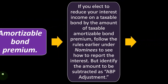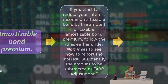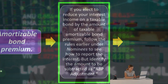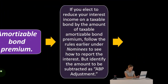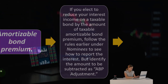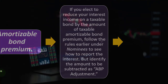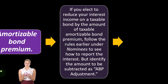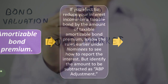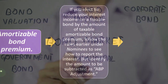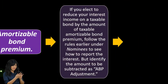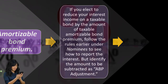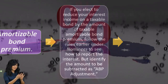For amortizable bond premium: when investing in bonds, you might be buying individual bonds or bonds within mutual funds. When you buy a bond, you're essentially loaning money to a corporation or government entity at a fixed rate. If you pay more than the face amount of the bond, you bought it at a premium. The difference between the premium and the face amount is considered interest, and you must deal with what's called an amortizable bond premium, which has taxable implications.